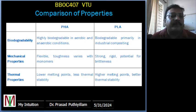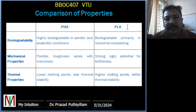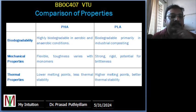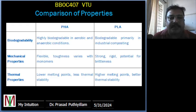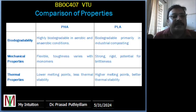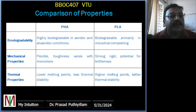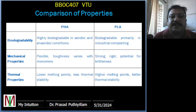Thermal properties: polyhydroxyalkanoates generally have a lower melting point and are less thermally stable compared to polylactic acid. PHB, for example, has a melting point around 175 degrees Celsius, whereas PLA has a higher melting point of approximately 180 degrees Celsius, providing better thermal stability. This makes PLA suitable for applications like 3D printing where higher temperatures are required.